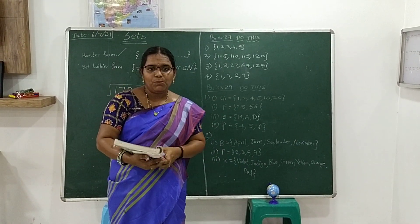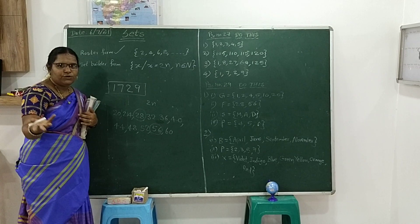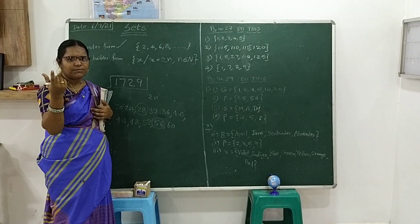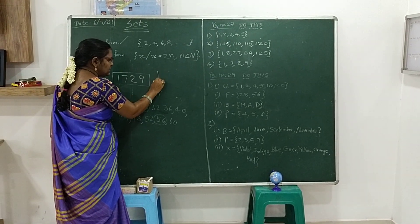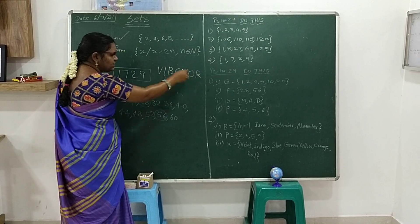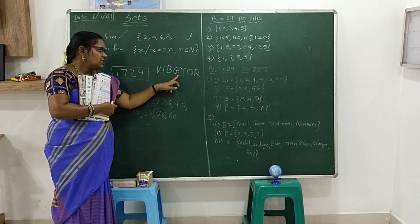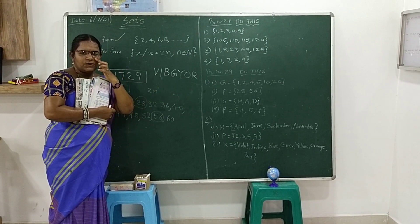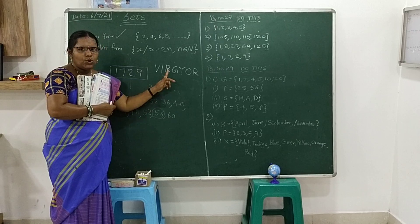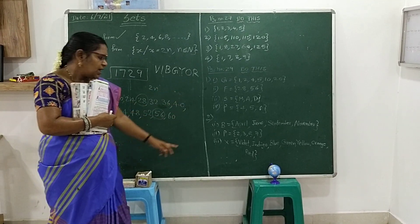Next: X is the set of colors in the rainbow. We can remember the rainbow colors with the word VIBGYOR — V for violet, I for indigo, B for blue, G for green, Y for yellow, O for orange, R for red. These are the colors in the rainbow. We write those color names separated by commas.